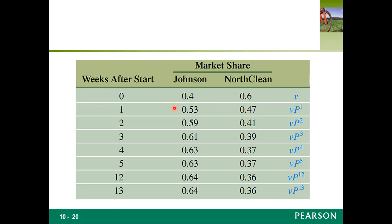In this section, what we're going to try to decide is what happens to an initial probability vector in the long run. Over a long period of time, as n gets larger and larger, we're going to assume that the transition probabilities remain constant from repetition to repetition.